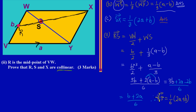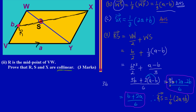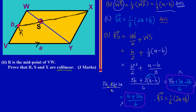Let me explain how I moved from the intermediate step to the final answer. I had 3b, and then I collected like terms: 3b and negative 2b, plus 2a, all over 6. Simply, 3 minus 2 leaves one b, and I have 2a — those are unlike terms — giving (2a plus b) over 6. Hope that was clear.